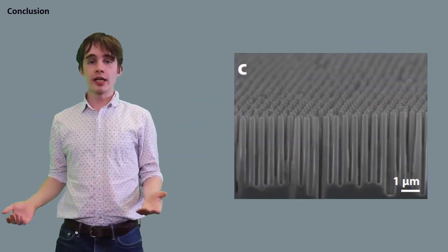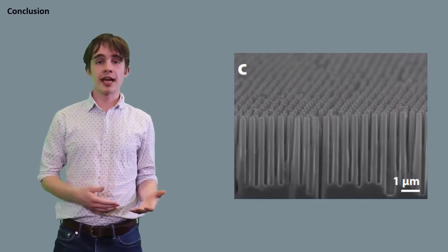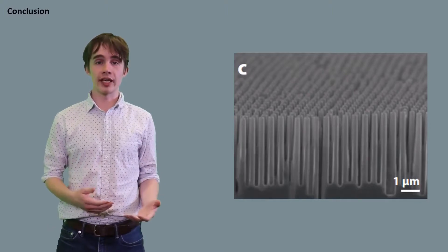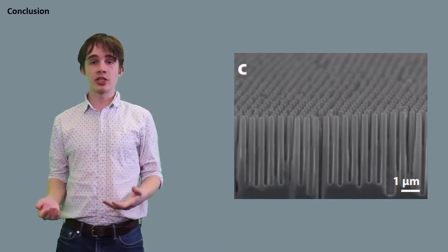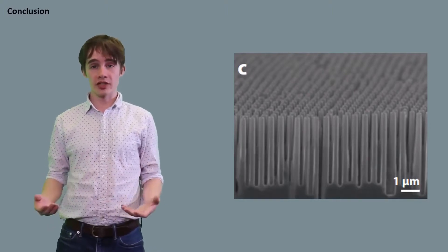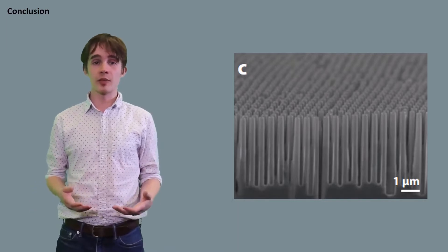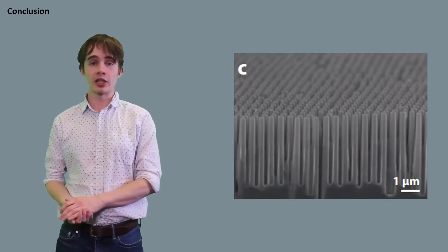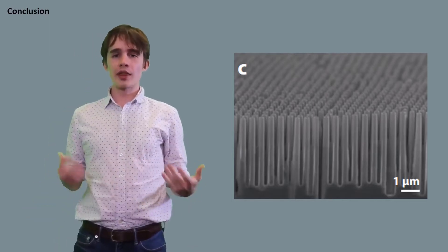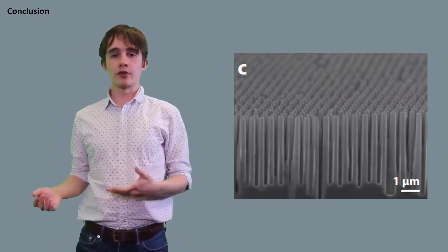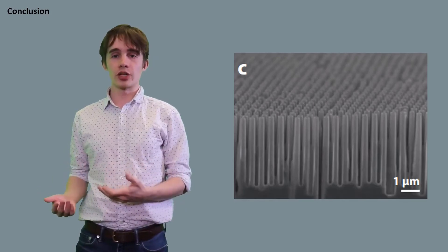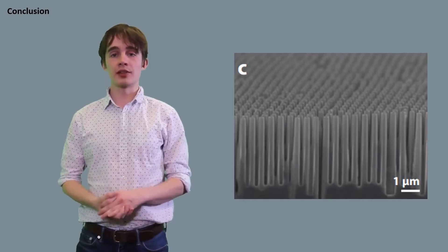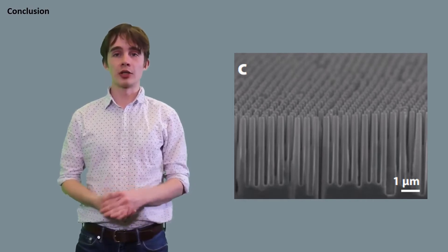In summary, nanowire solar cells can enhance the absorption, charge separation, and carrier collection processes in photovoltaics. This allows them to achieve similar efficiencies to conventional cells using a small fraction of the material. They can be fabricated using chemical vapor deposition or patterned chemical etching. It is unclear whether these devices will ever be used for large-scale electricity production. However, it's certain that the lessons learned in their development will be instrumental in the improvement of our global energy network.